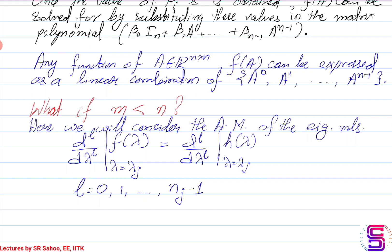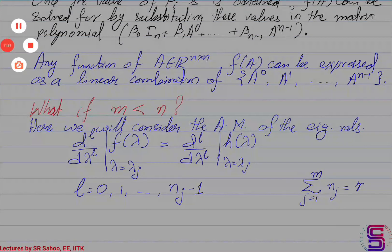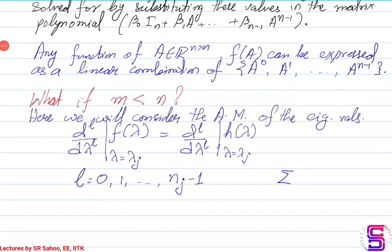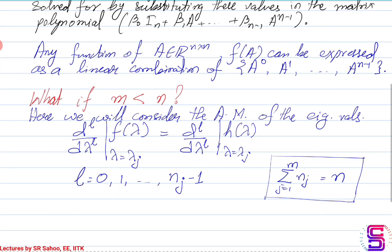If the algebraic multiplicity of the j-th eigenvalue λ_j is n_j, we already know that the summation of all algebraic multiplicities — the sum of n_j for j equal to 1 to m — equals n. So each eigenvalue can be used to generate n_j number of equations, and you will end up with n number of equations in total, which you can solve for.